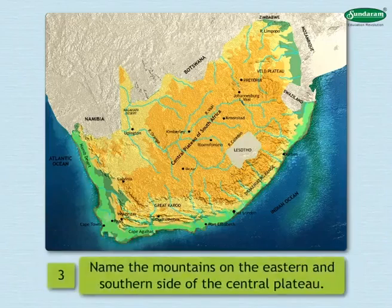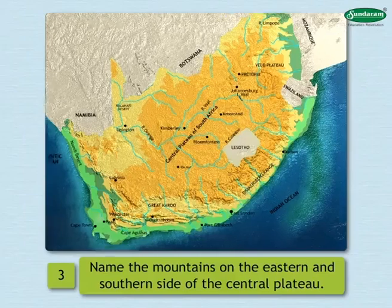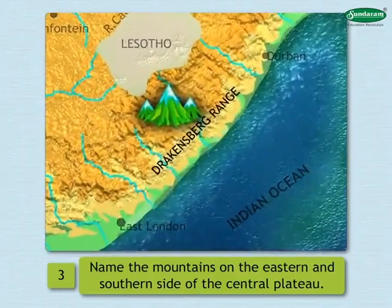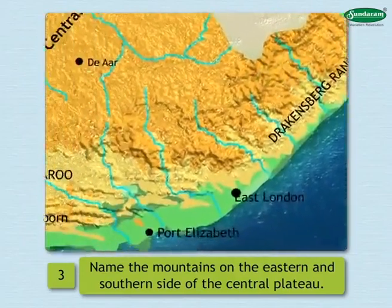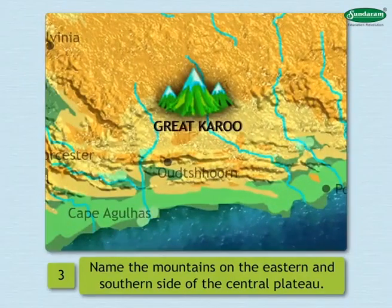3. Name the mountains on the eastern and southern side of the central plateau. Try to locate them on the map. To the east lies the Drakensberg Range and to the south lies the Great Karoo Mountains.